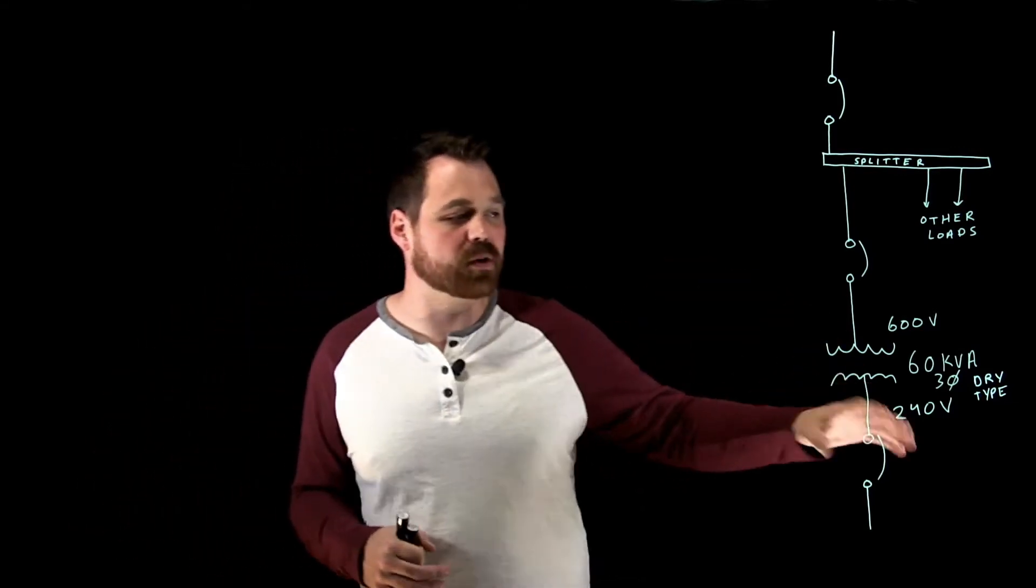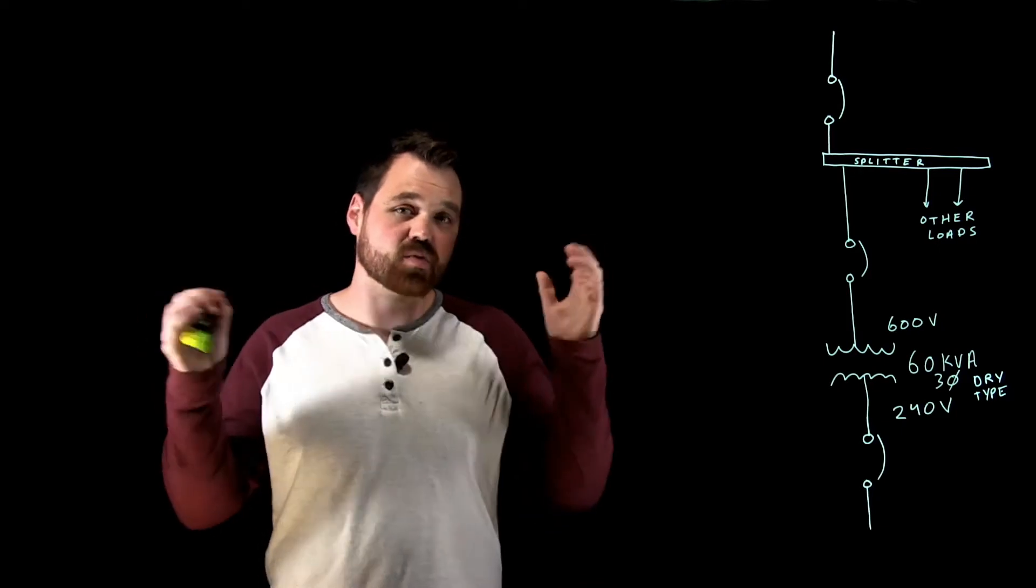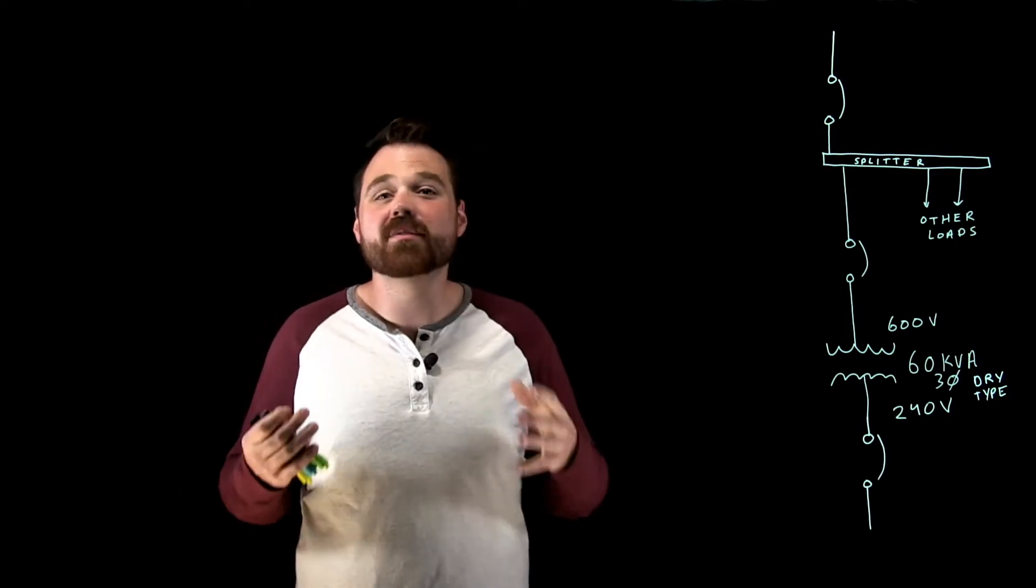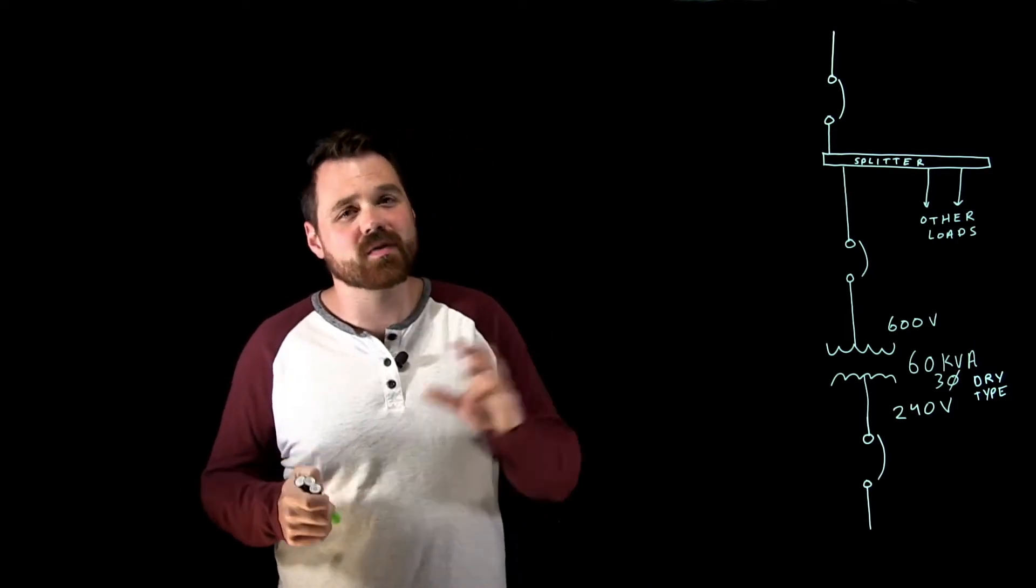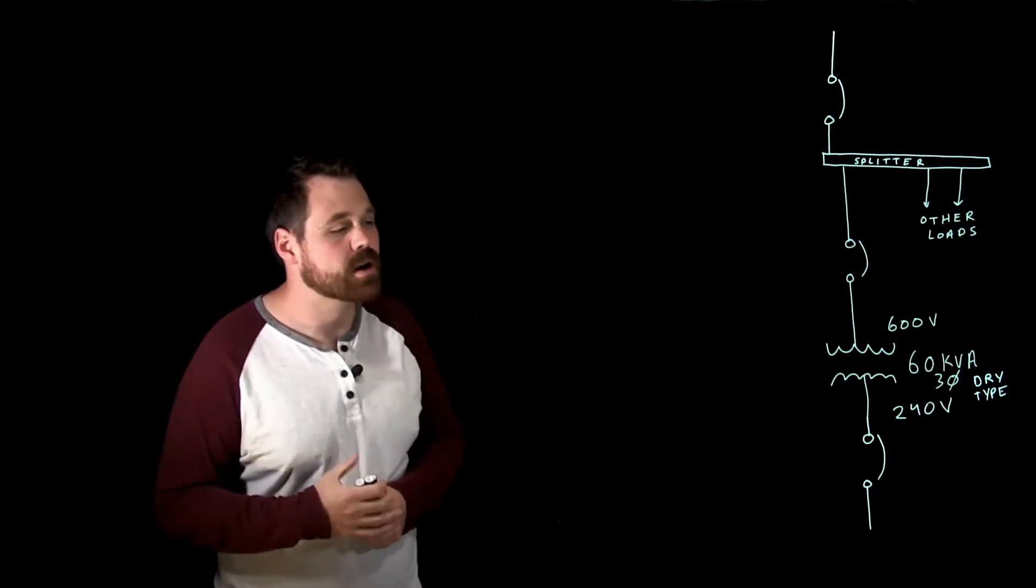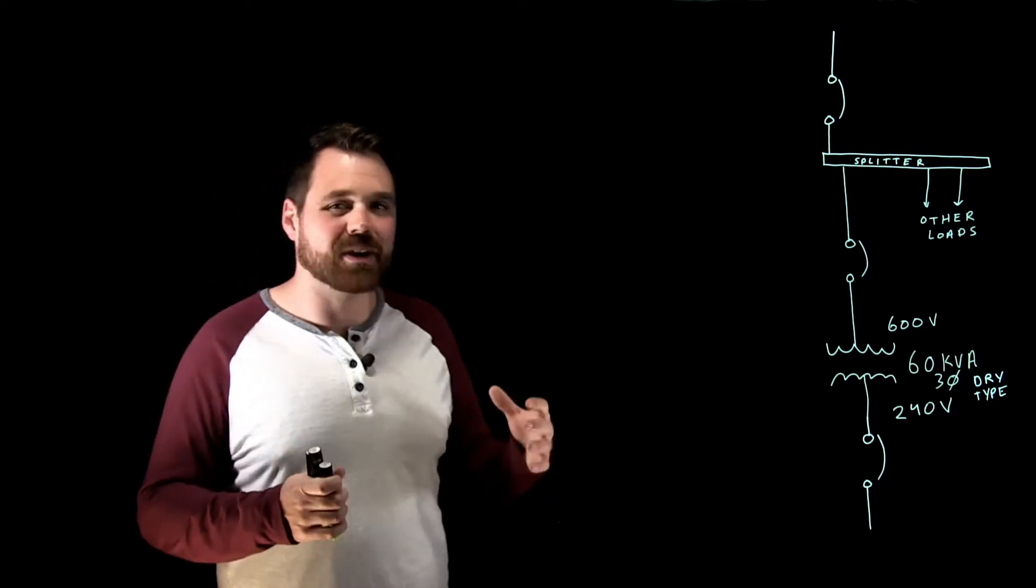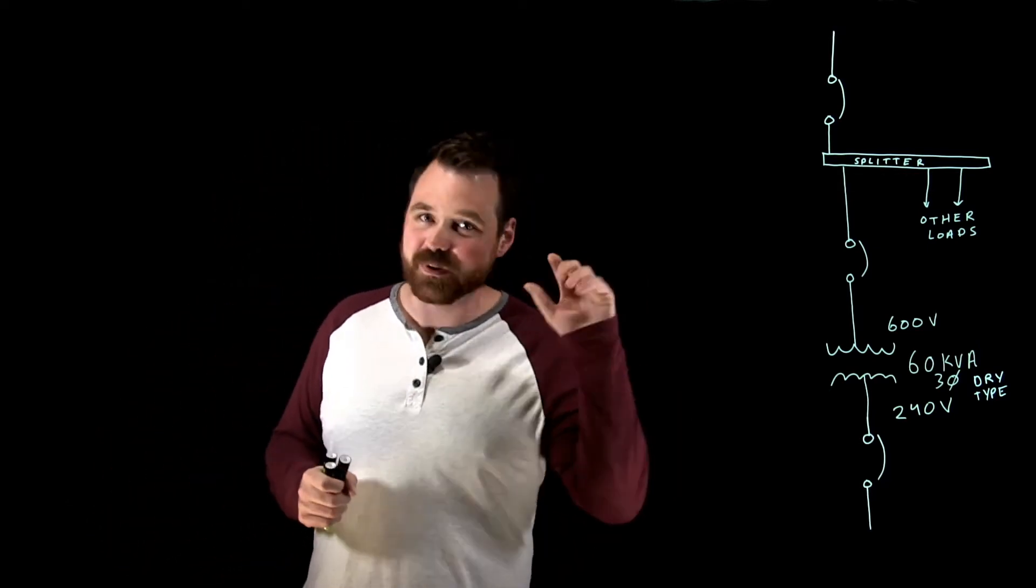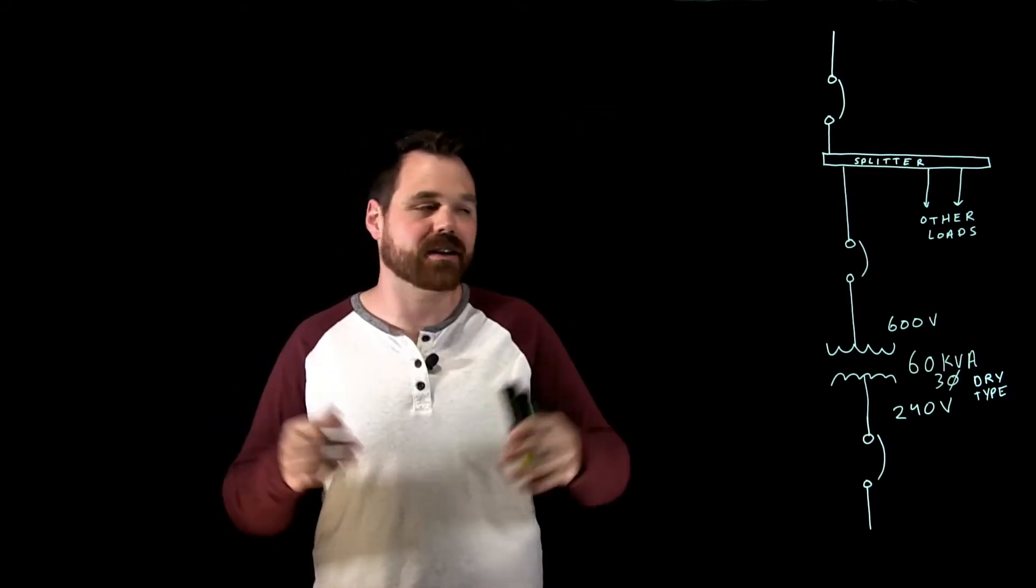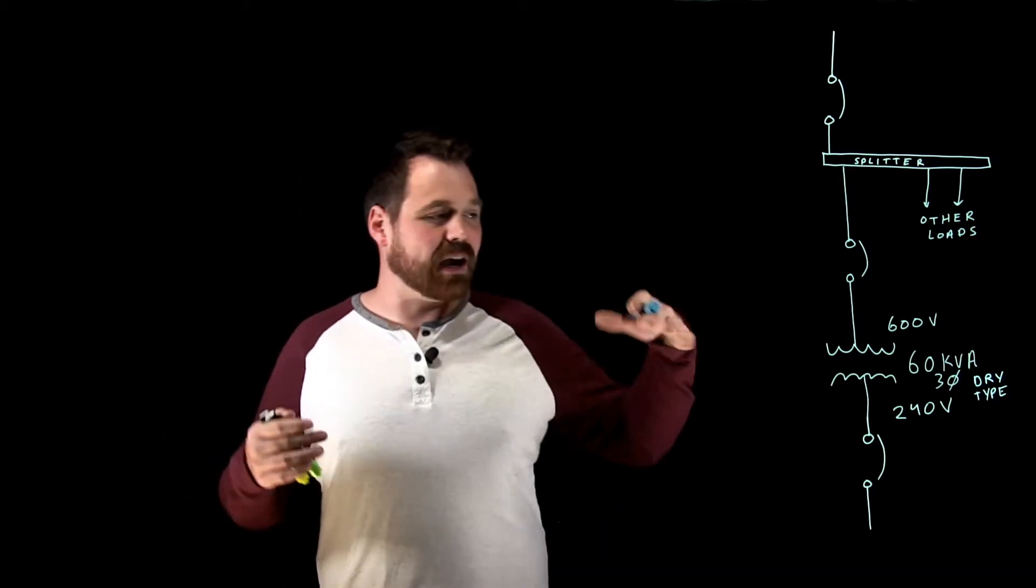We're going to use this one as an example and cover all the rules that go along with sizing that overcurrent device. It is just one rule in our code book. The biggest thing with all transformer rules and calculations for overcurrents - this is the most common type in the actual installation field - is you want to make sure you read the whole rule. Don't just read one sub rule and think you're done because they sneak up on you. There's sub rules way down that'll apply.